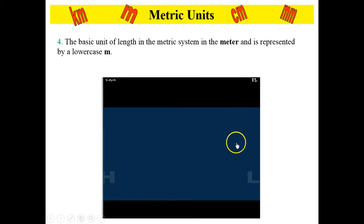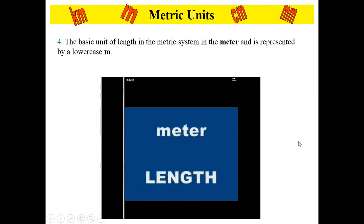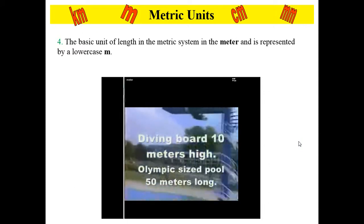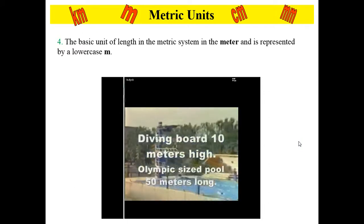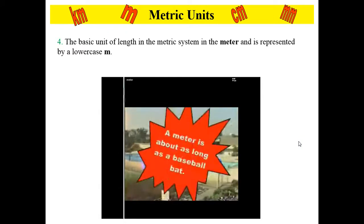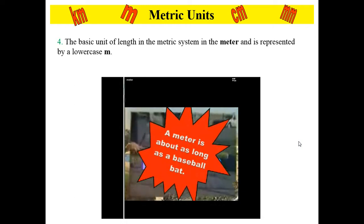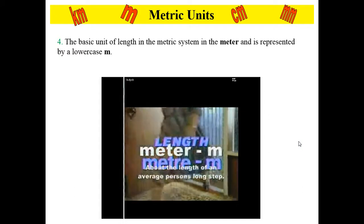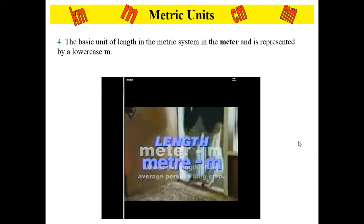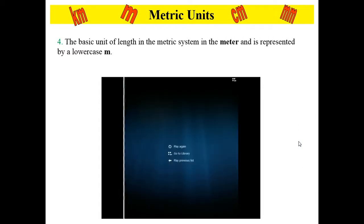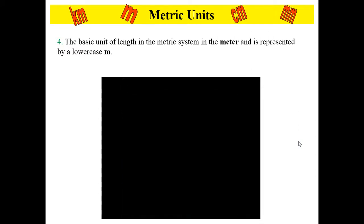Take a look at what a meter looks like in the real world. Athletic tournaments throughout the world measure in metric dimensions. This diving board is 10 meters high. An Olympic-sized pool is 50 meters long. A meter is about as long as a baseball bat, or the length of an average person's long staff. The height of a door handle on a standard door is about one meter from the floor.